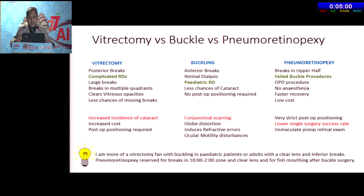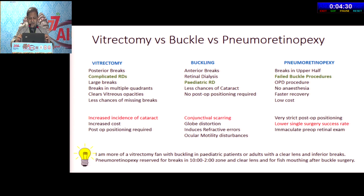A few decision problems we face during managing retinal detachment: first and foremost is vitrectomy, buckling, or pneumoretinopexy — what to do. In complicated RDs, you have to go with vitrectomy. In young or pediatric patients, everybody's first choice will be buckling. Pneumoretinopexy may be done in failed buckling procedures or breaks in the upper half of the retina.